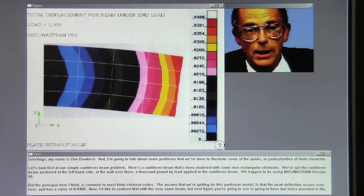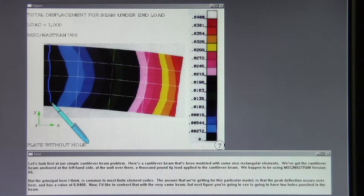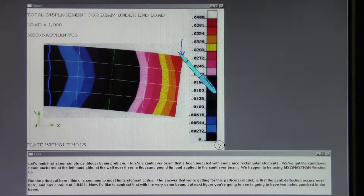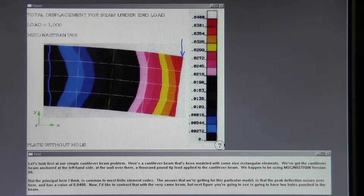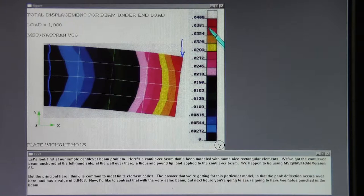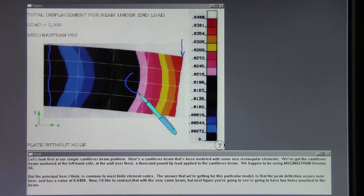Let's look first at a simple cantilever beam problem. Here's a cantilever beam that's been modeled with some nice rectangular elements. We've got the cantilever beam anchored at the left-hand side of the wall over there. A thousand-pound tip load applied to the cantilever beam. We happen to be using MSC Nastran version 66, but the principle here, I think, is common to most finite element codes. The answer that we're getting for this particular model is that the peak deflection occurs over here and has a value of .0408. Now, I'd like to contrast that with the very same beam, but next figure you're going to see is going to have two holes punched in the beam.